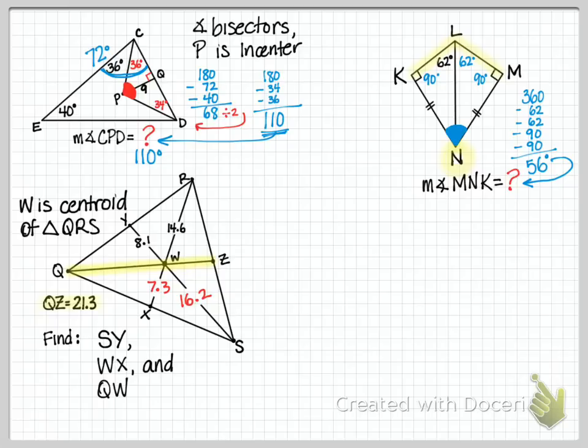And we also have that the entire segment QZ is 21.3. So we divide that into thirds, and the smaller portion is one of those thirds, 7.1. The longer portion is two of those thirds, 14.2.